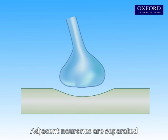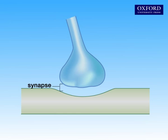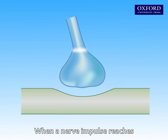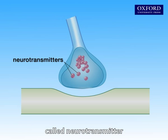Adjacent neurons are separated by a narrow gap called a synapse. When a nerve impulse reaches the ending of an axon, it stimulates the ending to release a chemical called neurotransmitter.